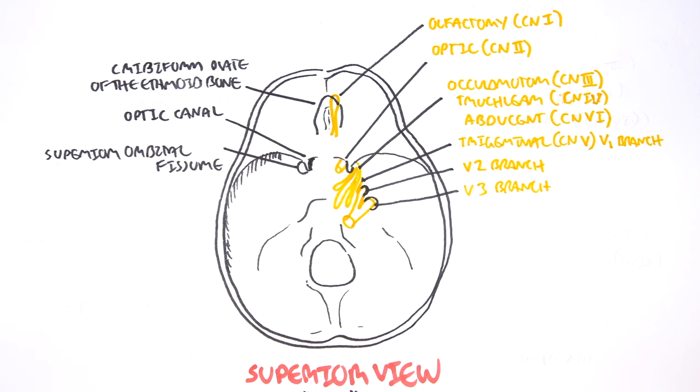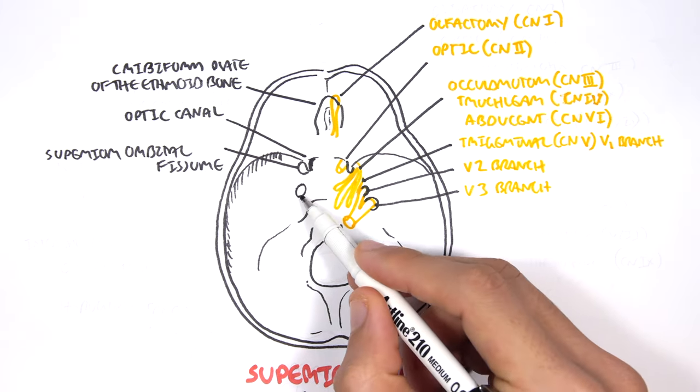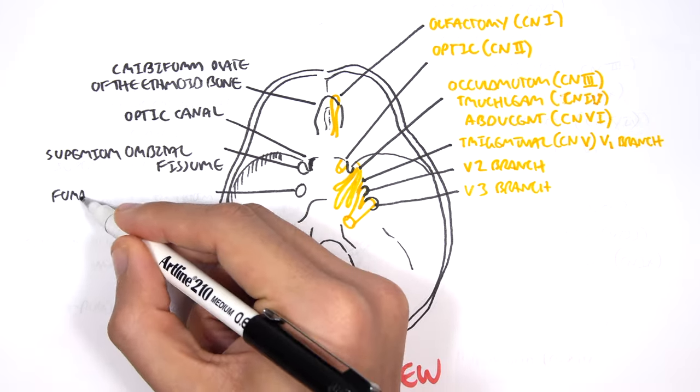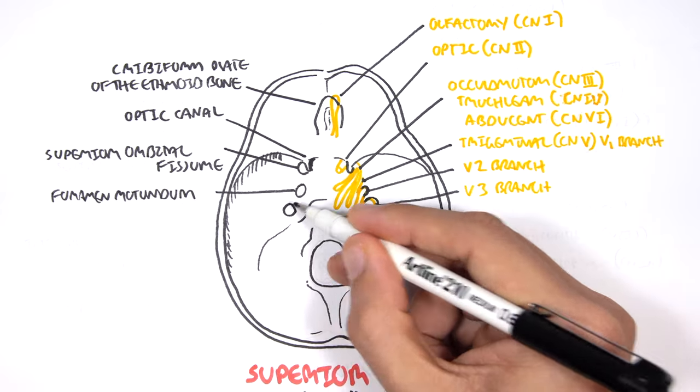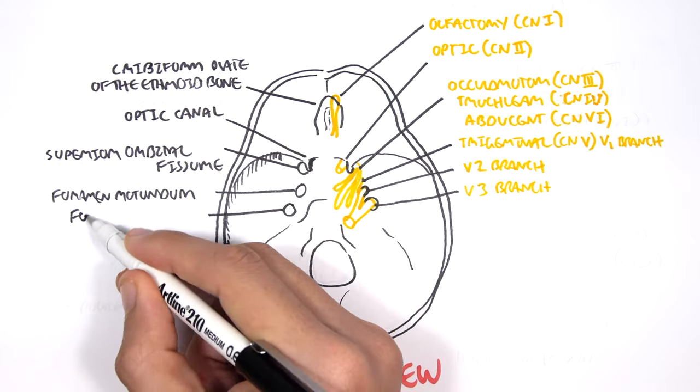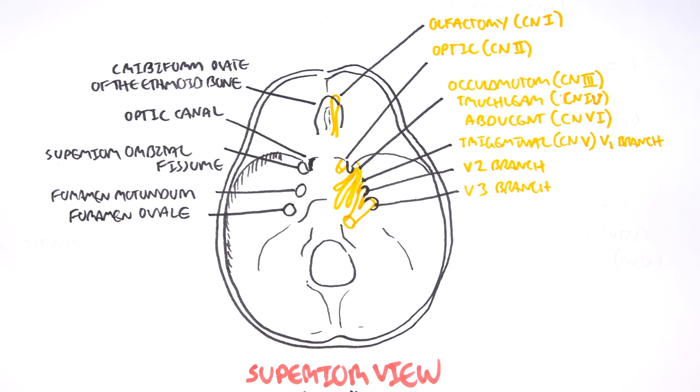Let's look at the other branches of the trigeminal nerve, the V2 and the V3 and where they pass through. The V2 branch passes through the foramen rotundum. The V3 branch, also known as the mandibular branch, exits through the foramen ovale.